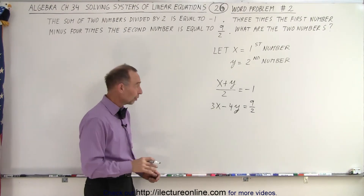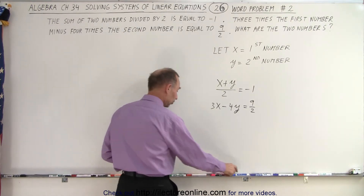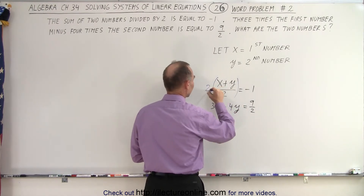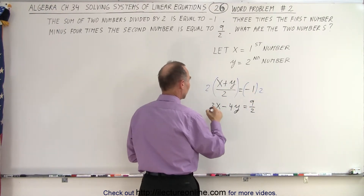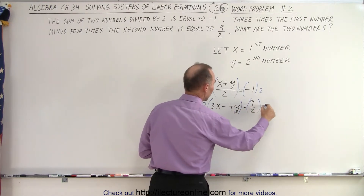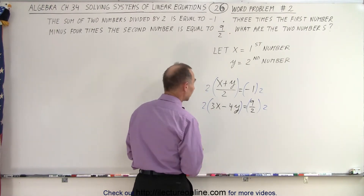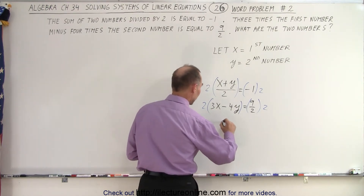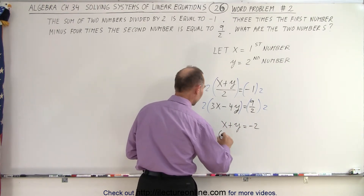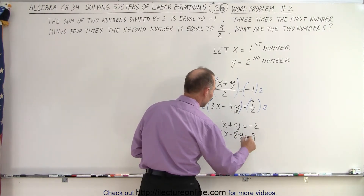Whatever method works, but first of all we have fractions. We don't like fractions; we want to get rid of them. Let's multiply both sides of the first equation by 2 to get rid of this fraction, and multiply the left and right sides of the second equation by 2 as well, because fractions just make things a lot harder. The first equation then becomes x plus y is equal to negative 2. The second equation becomes 6x minus 8y is equal to 9.